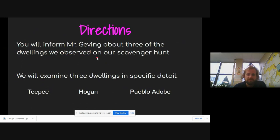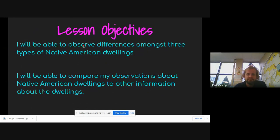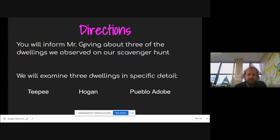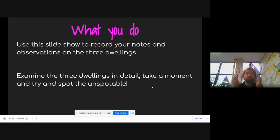Thank you. Thanks to everybody who was reading, that was awesome and really good voices too. Your goal is to inform me about those three dwellings and we're gonna be doing that by observing our differences. Yesterday we looked at about twelve different dwellings. Today we're gonna look in depth at the tipi, the Hogan, and the Pueblo adobe. Those are the three that we're gonna really look at.